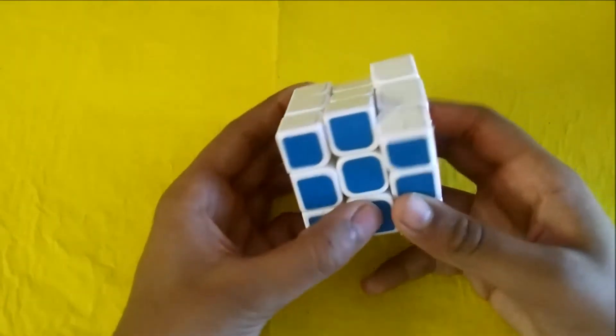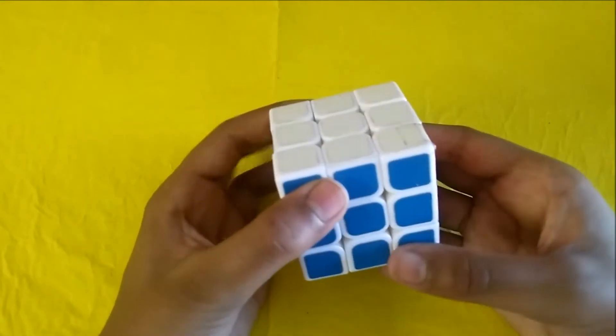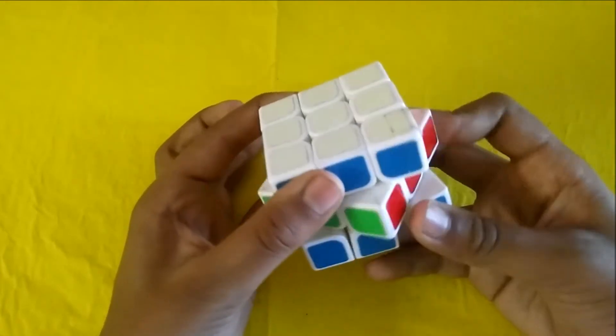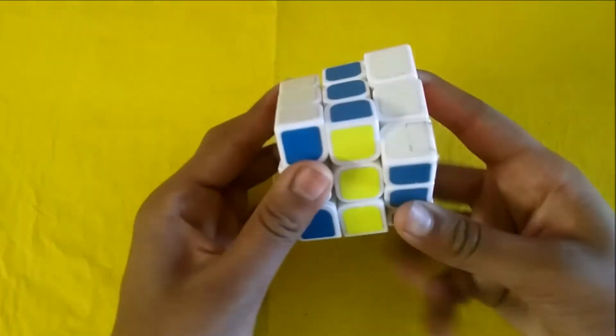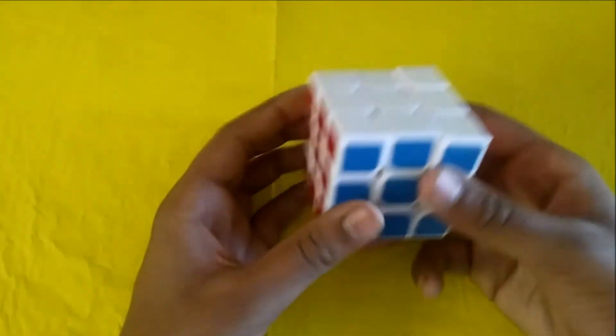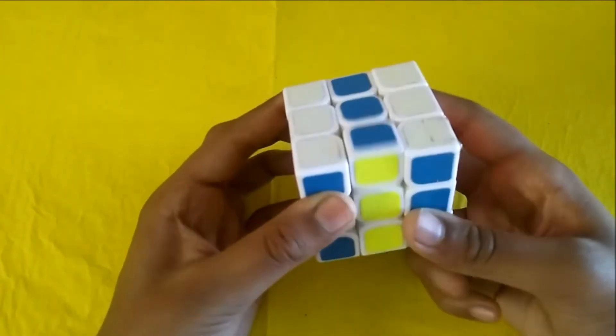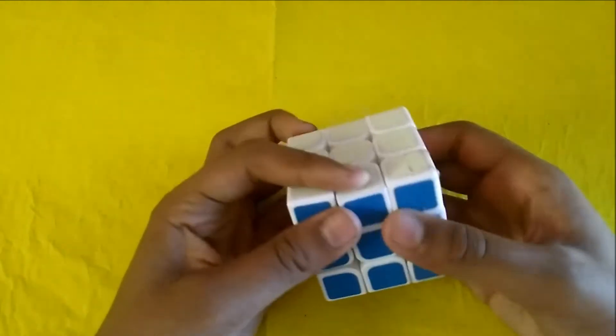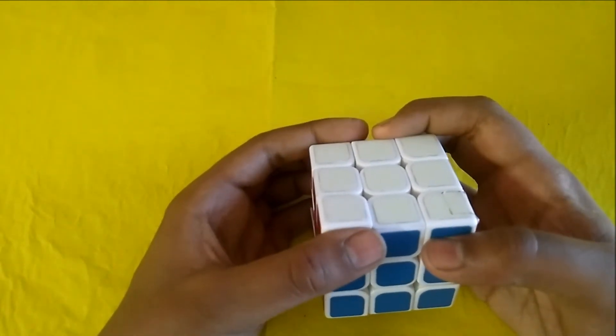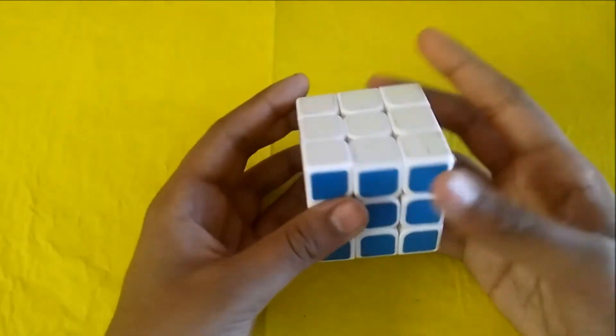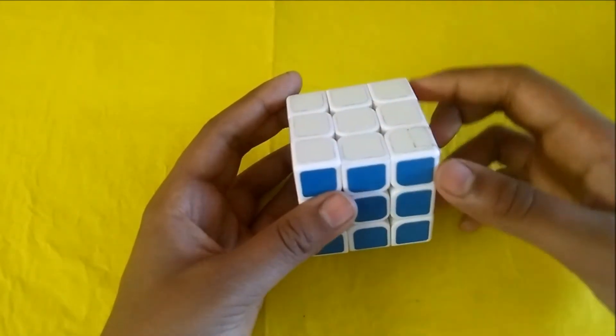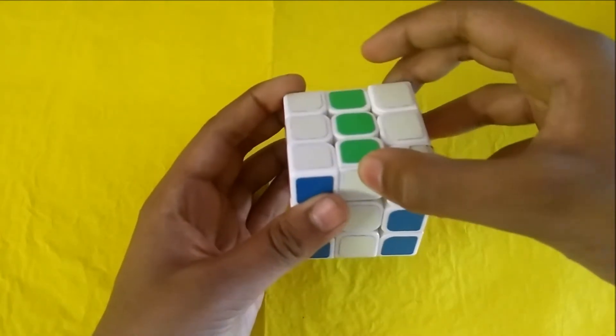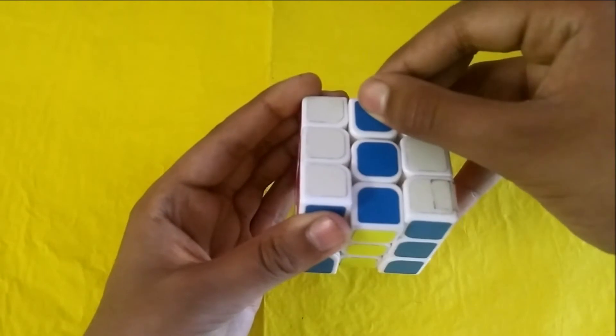Then it comes the middle layer. This is the middle layer. It is the easy one. If I say M, you are going to do this one time. In M it doesn't come M prime. If some YouTubers tell you M prime, you are just going to move it downwards. If it is M, then upwards.